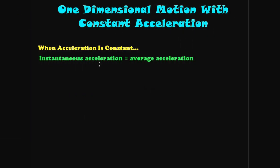Today's video is about one-dimensional motion with constant acceleration. When the acceleration is constant, the instantaneous acceleration is equal to the average acceleration. This allows us to use the formula for average acceleration rather than the one for instantaneous acceleration, which contains the limit sign.